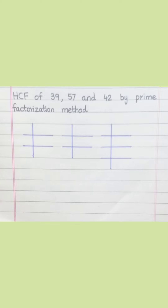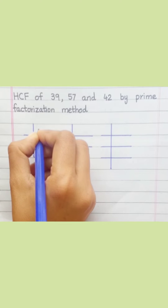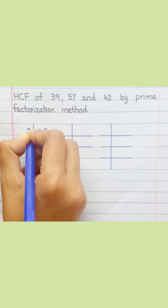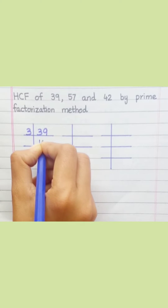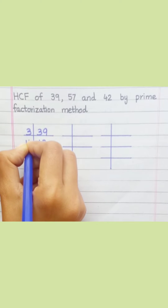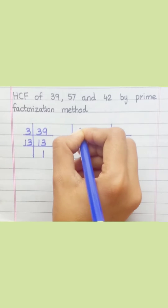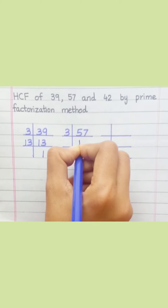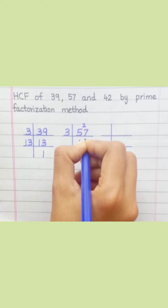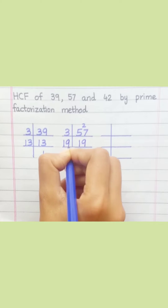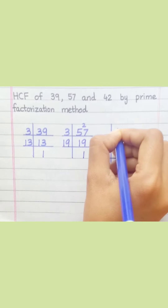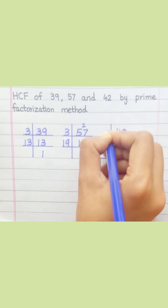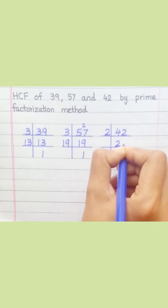HCF of 39, 57, and 42 by prime factorization method. 39: 3 times 13. 57: 3 times 19. 42: 2 times 3 times 7.